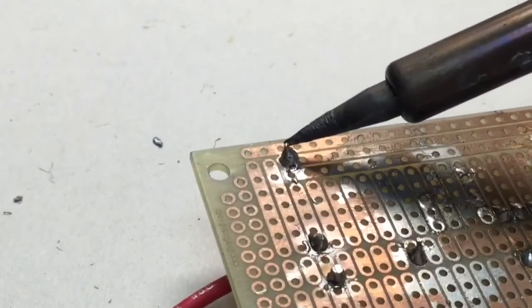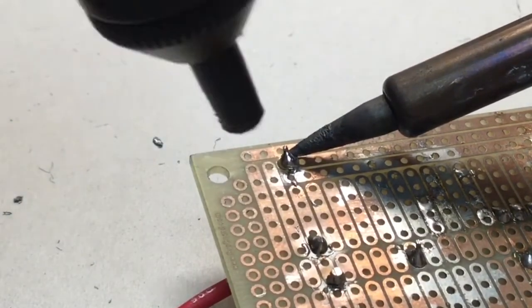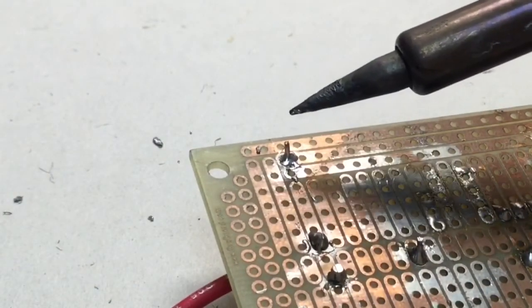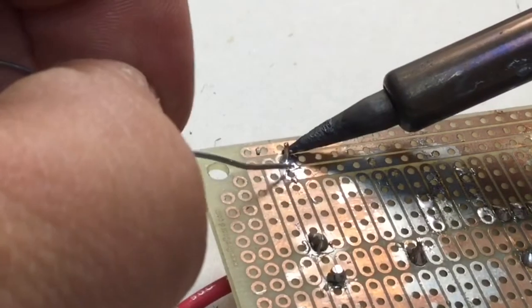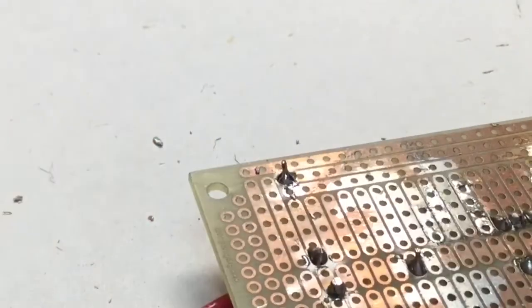All right, here's an example of a cold connection. What I'm going to do is reheat it and suck away a lot of the excess solder here. Then I'm going to reapply just a little bit more solder, wait for that puff of smoke to happen, and remove in an upward direction.